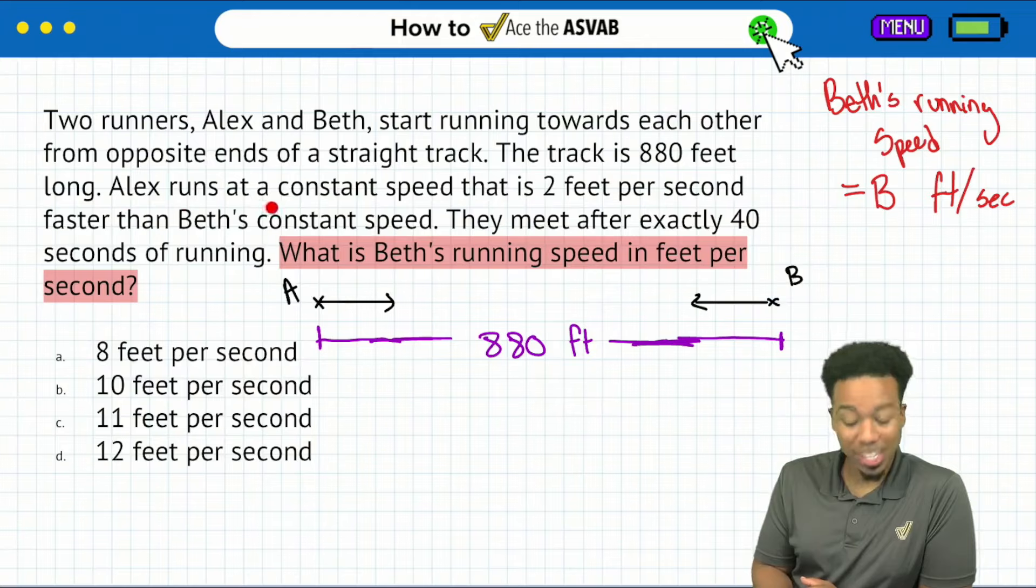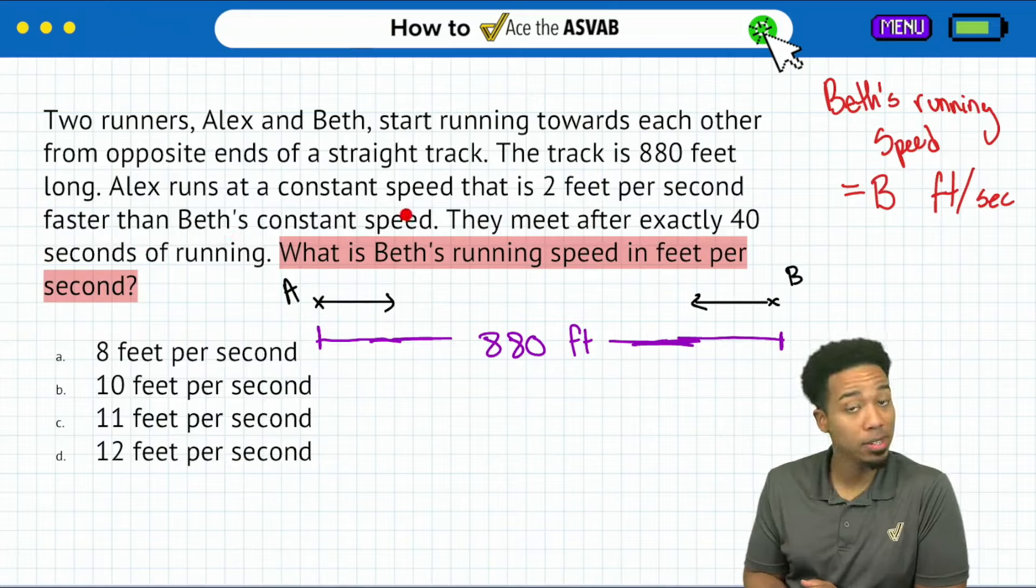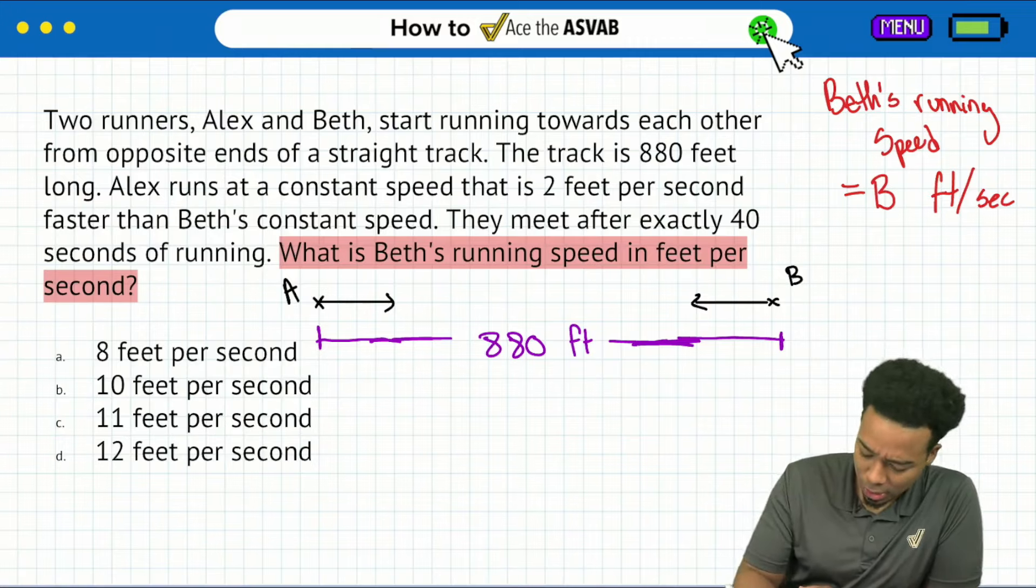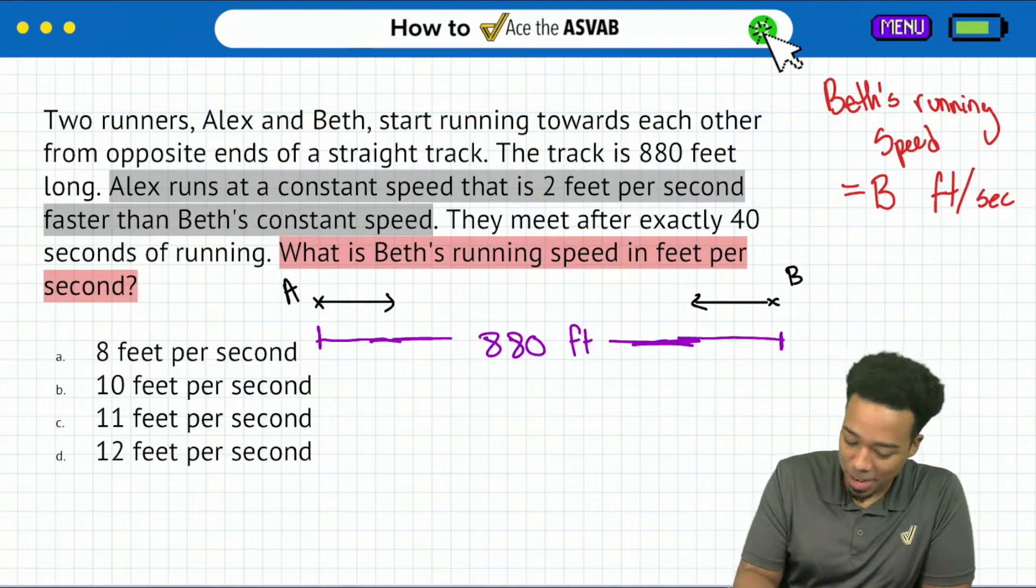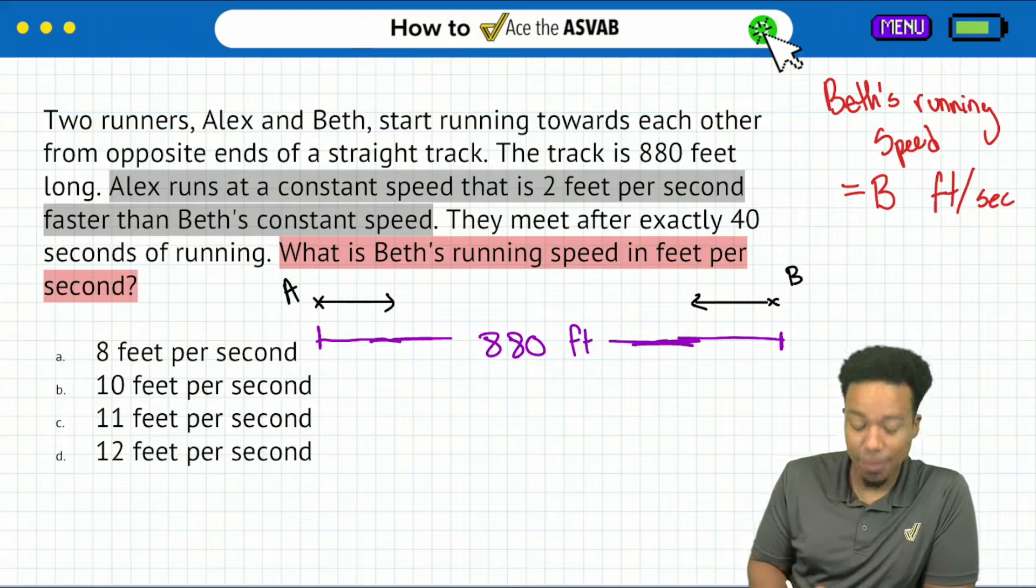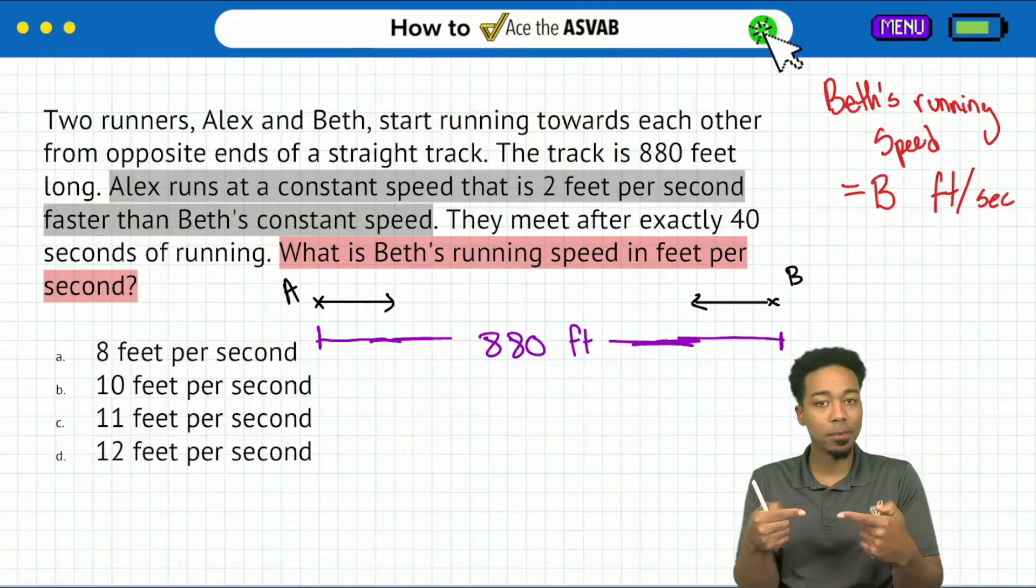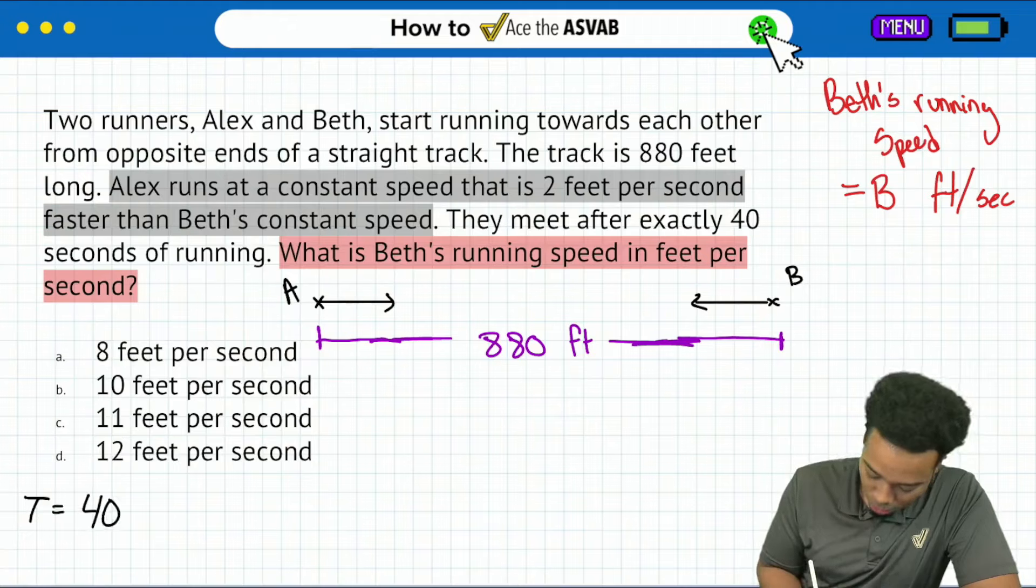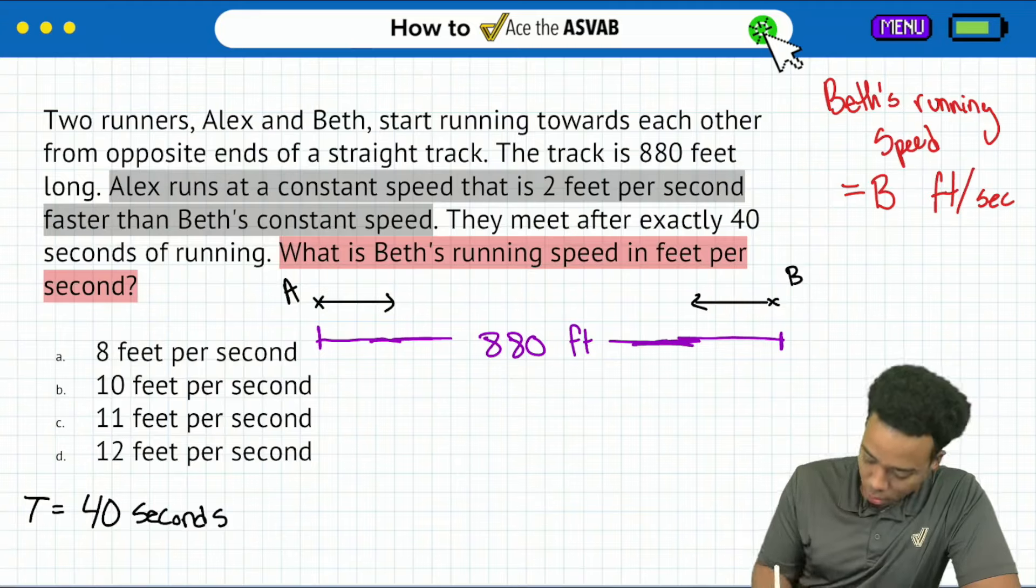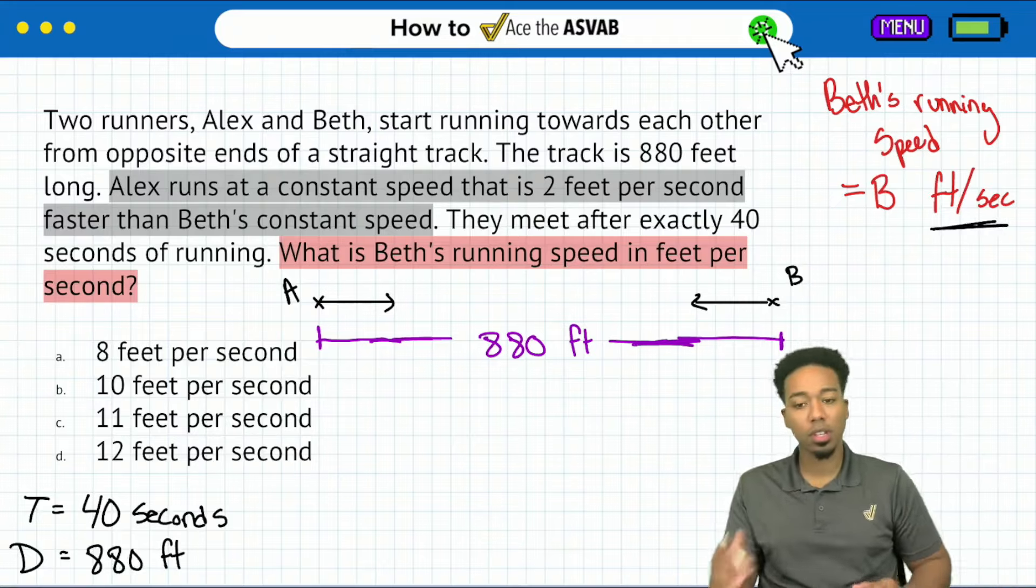Next, it says Alex runs at a constant speed that is two feet per second faster than Beth's constant speed. That can be tricky to digest, so let me highlight that. Then it says they meet after exactly 40 seconds of running, so the time period we're dealing with, time equals 40 seconds. We also have the distance as 880.